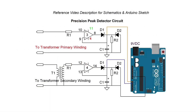Looking at the precision peak detector circuit, you can see the connection points back to the primary winding as well as the secondary winding. I used a step-up transformer T1 in the secondary to increase the AC voltage before converting back to DC, in order to increase the accuracy of the results.